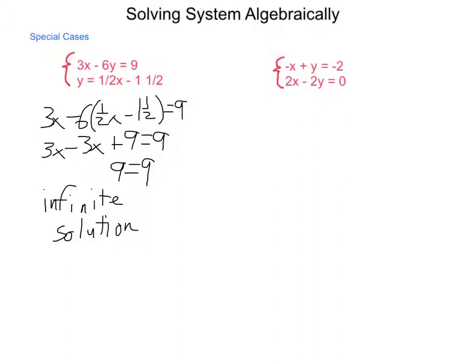Now let's take a look at the other. -x + y = -2 and 2x - 2y = 0. This is set up nicely to work for either substitution or elimination. To get some practice, I'm going to choose elimination. I'm going to double the entire first equation and write it right underneath. So what I end up with is -2x + 2y = -4.